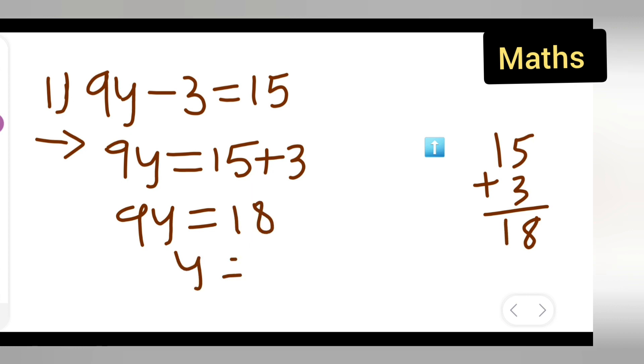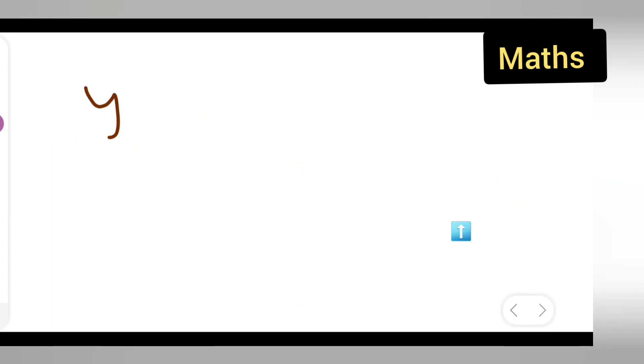So you will get y is equal to 18 upon 9. Now, y is equal to 18 upon 9 is given, right? Divide and see what I am going to get.